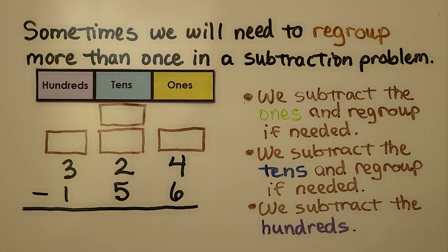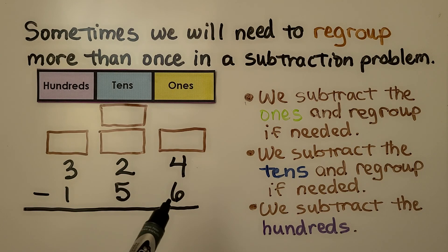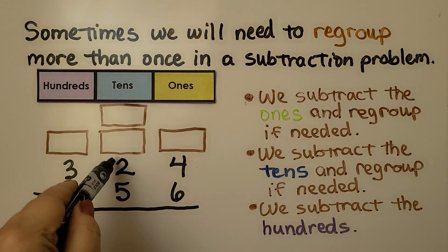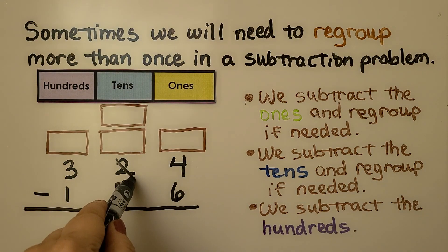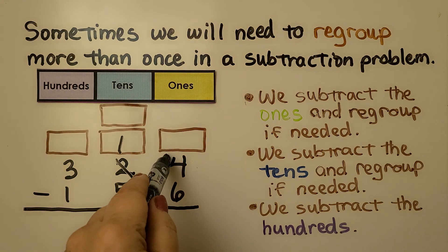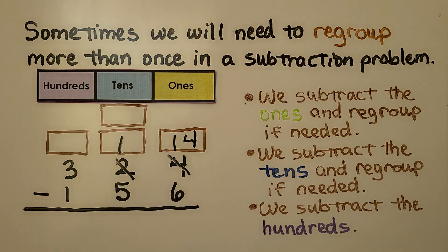Sometimes we will need to regroup more than once in a subtraction problem. The first thing we do is subtract the ones and regroup if needed. We have four ones, we need to take away six ones — we don't have enough in the minuend. So we're going to go to the tens place, cross off this two tens and make it a one ten. We give that ten to the ones place as ten ones. Now we don't have four ones anymore, we have fourteen. Fourteen minus six is equal to eight.